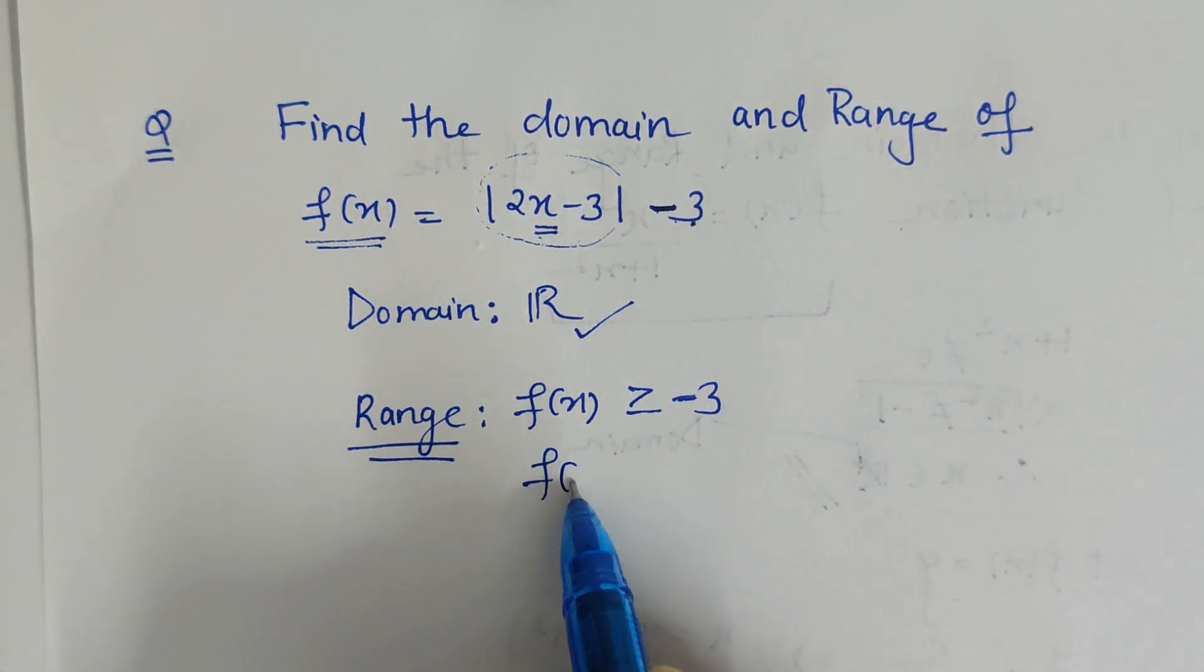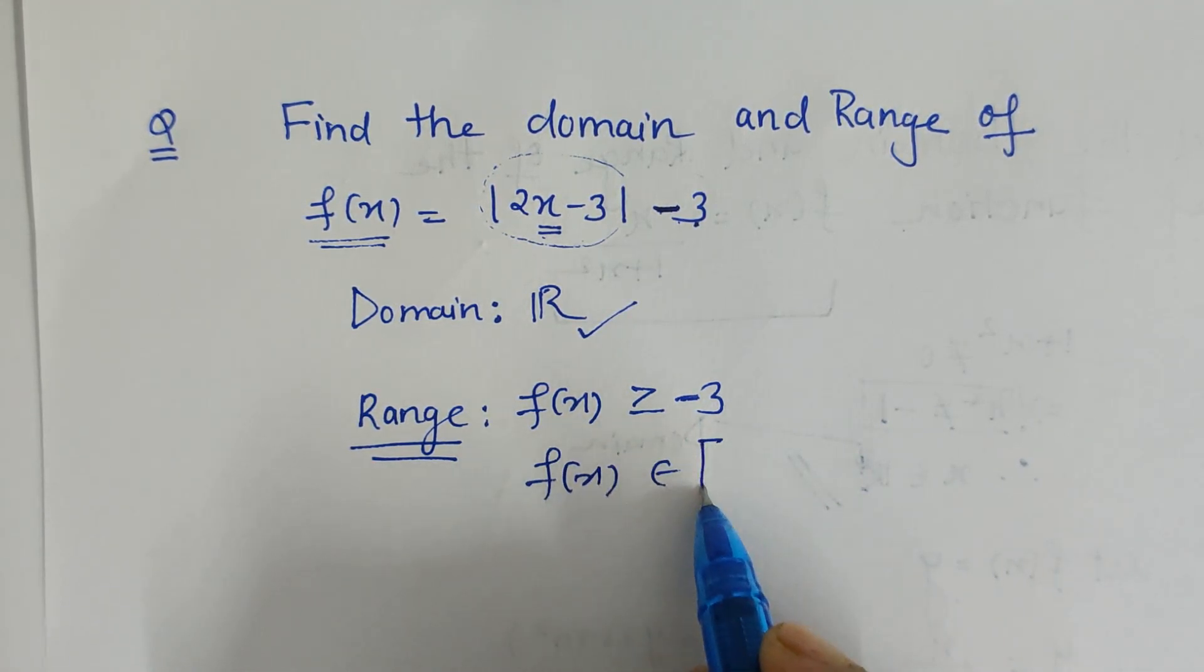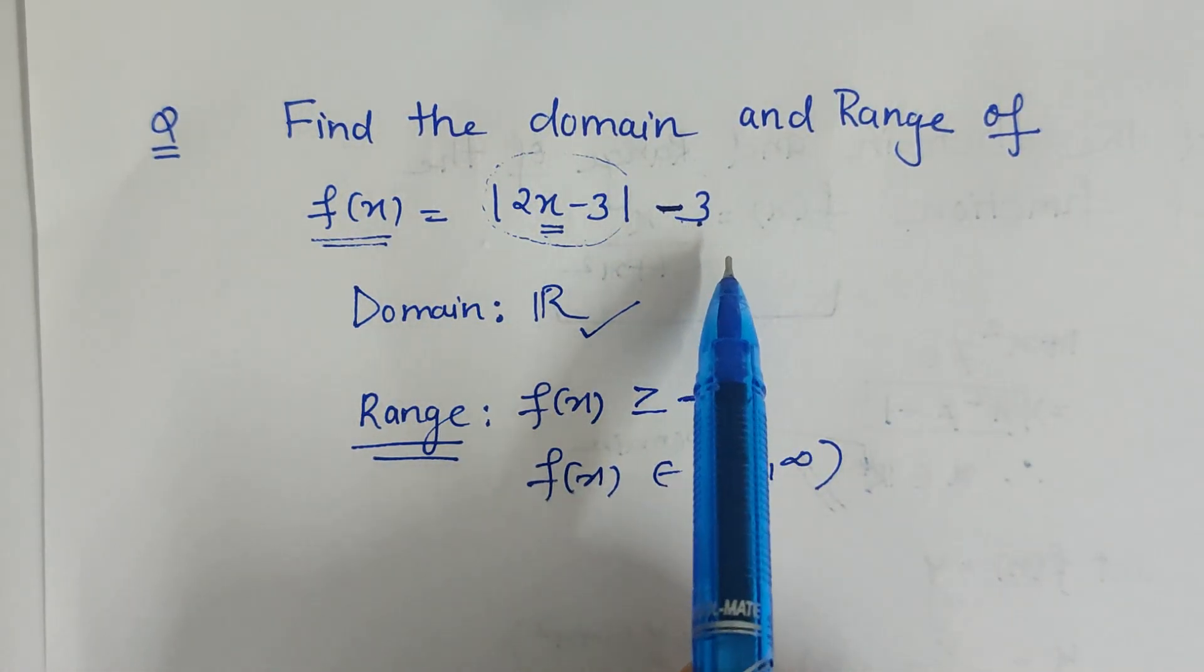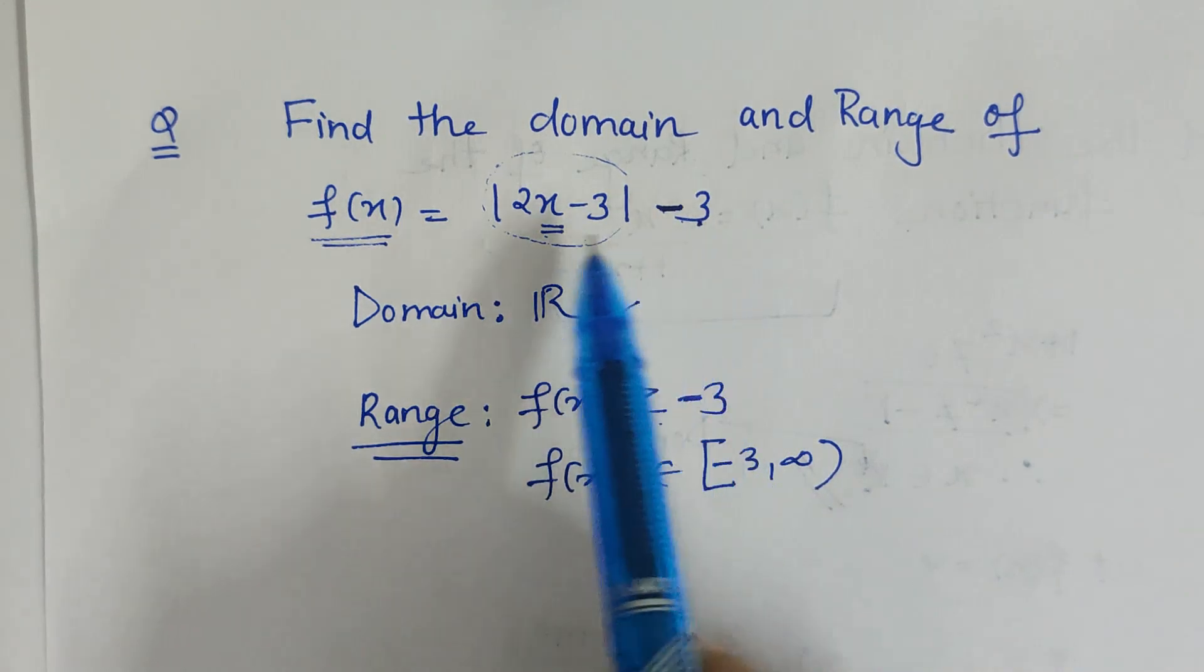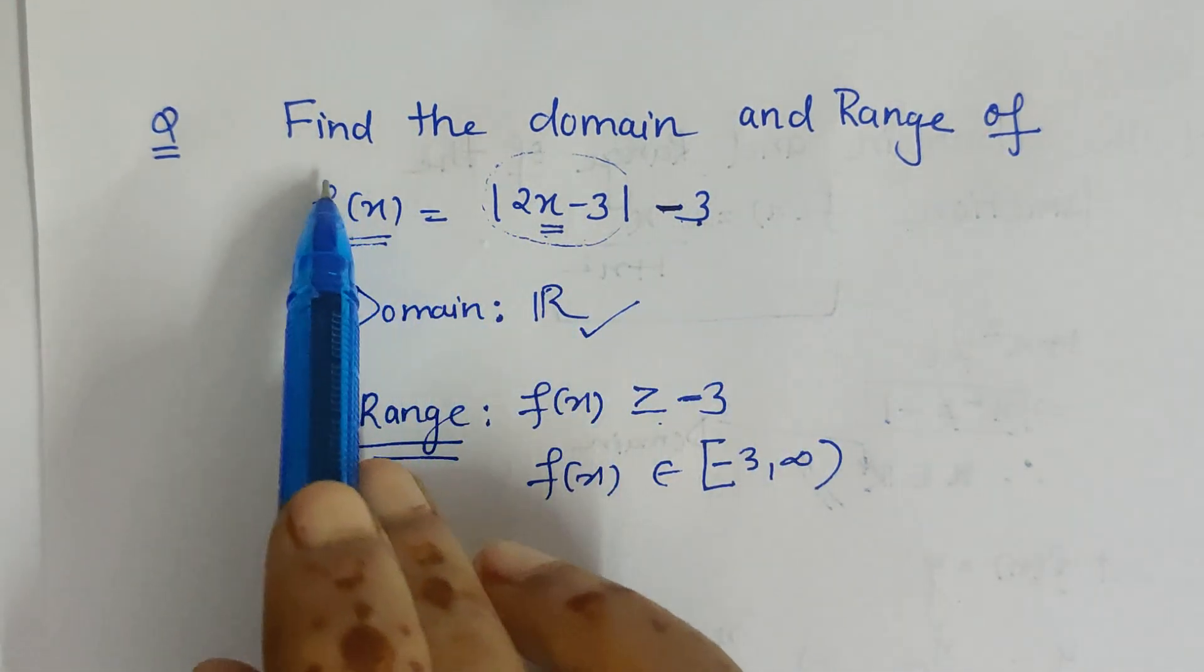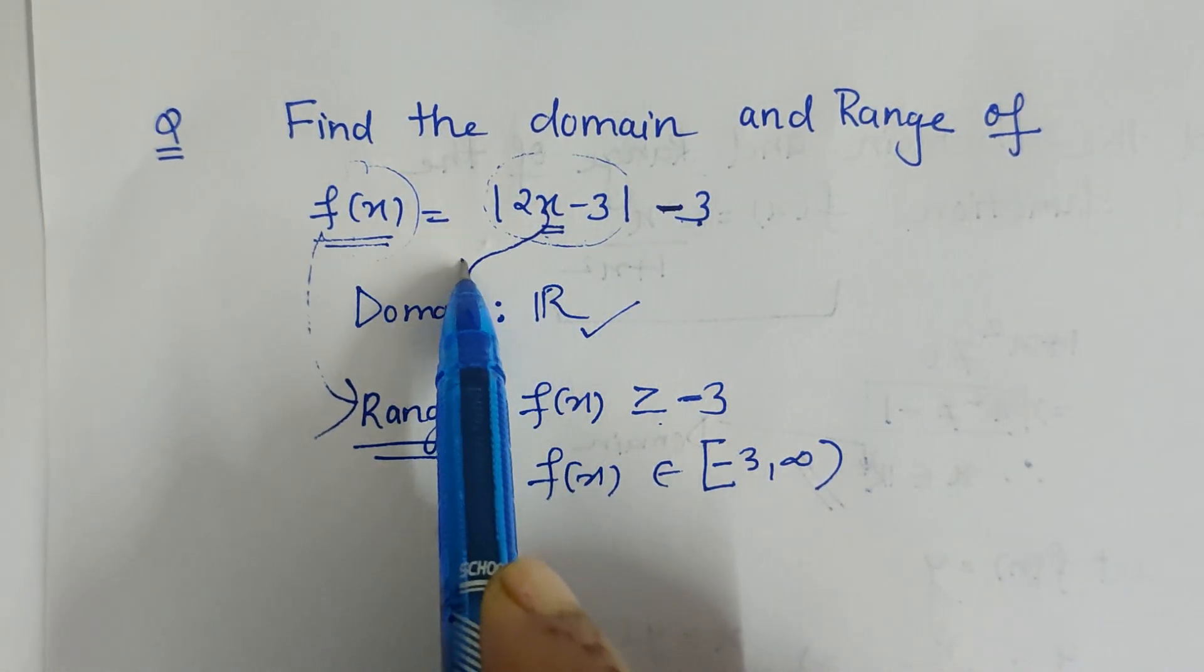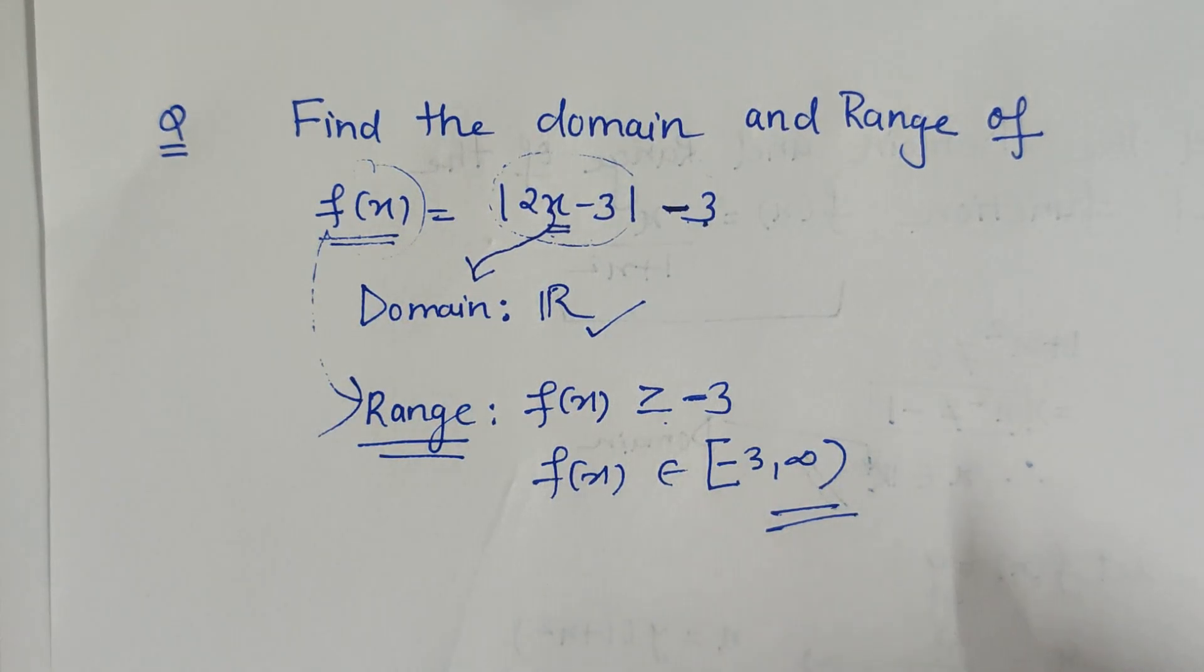So the range for the function f(x) is nothing but closed interval [-3, ∞) because it is always greater than or equal to -3 and we may get any value for the function f(x). So the value of f(x) is my range and value of possible values of x is domain.